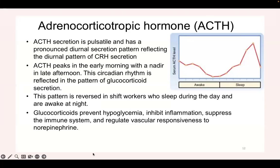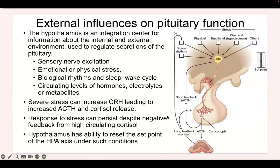The effects of glucocorticoids include preventing hypoglycemia — they don't allow blood sugar levels to drop too low. They also inhibit inflammation and suppress the immune system. This is why when someone receives a transplant, glucocorticoids are given so that the immune system does not reject it. Other influences on pituitary function include nerve excitation, emotional stress, sleep-wake cycles, and other hormones.